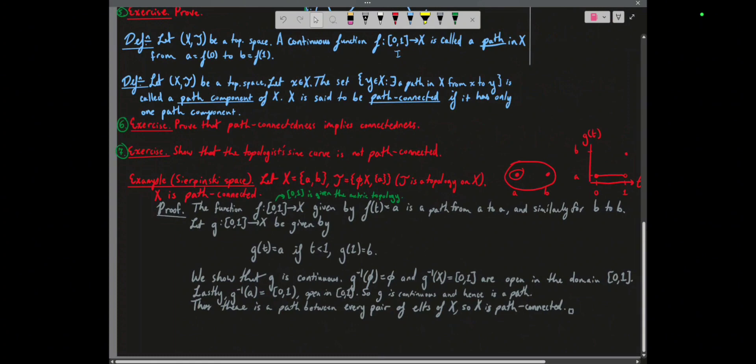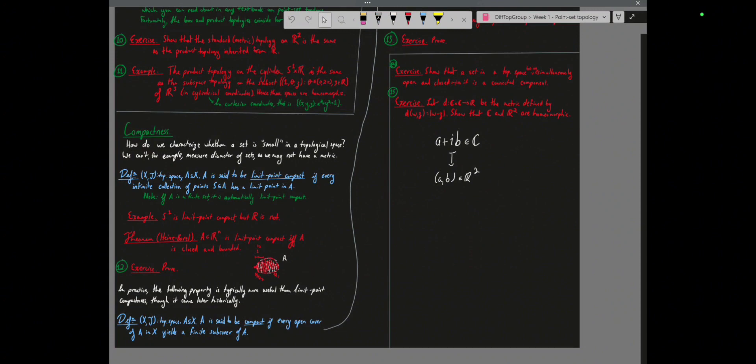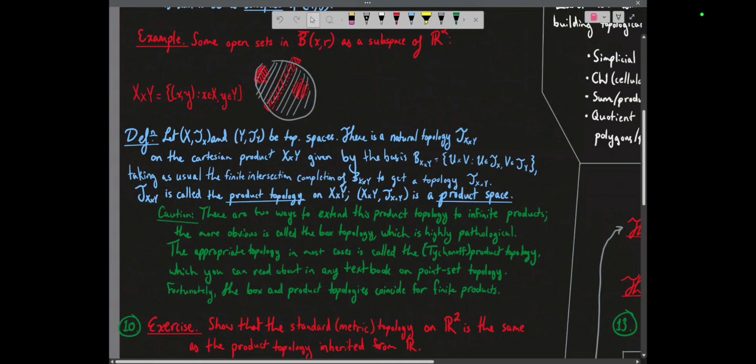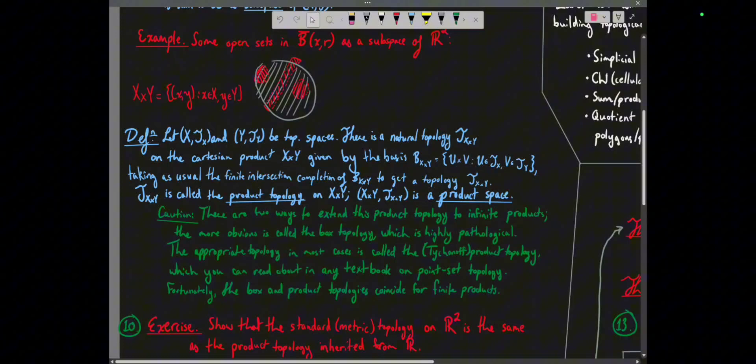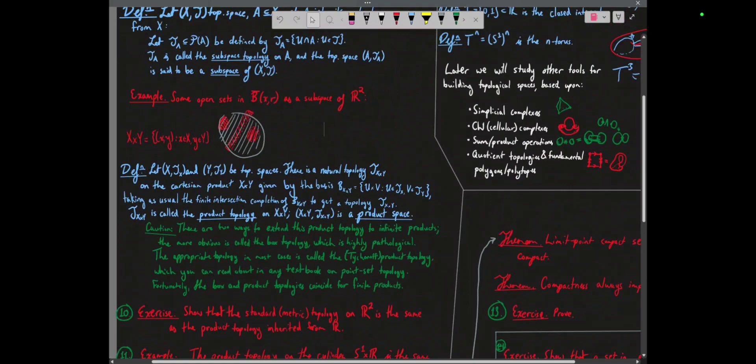Also, the definition of the product topology has been corrected at the end of the notes — that's the corrected definition of the product topology on finite Cartesian products, or a pairwise Cartesian product of X and Y.